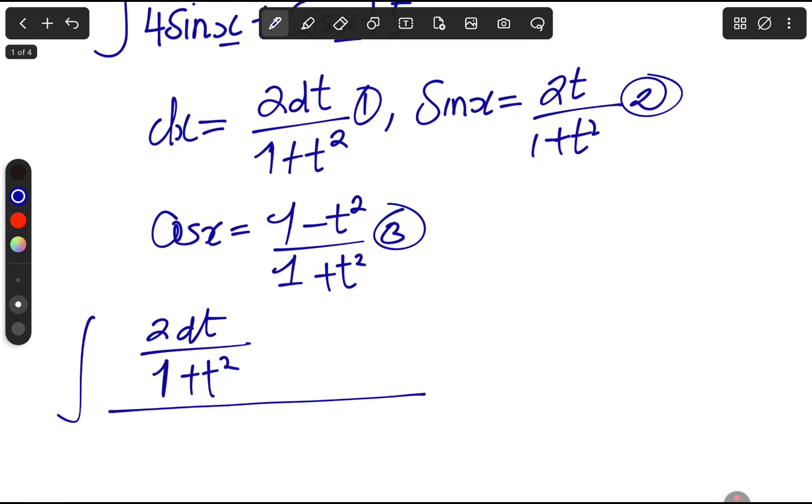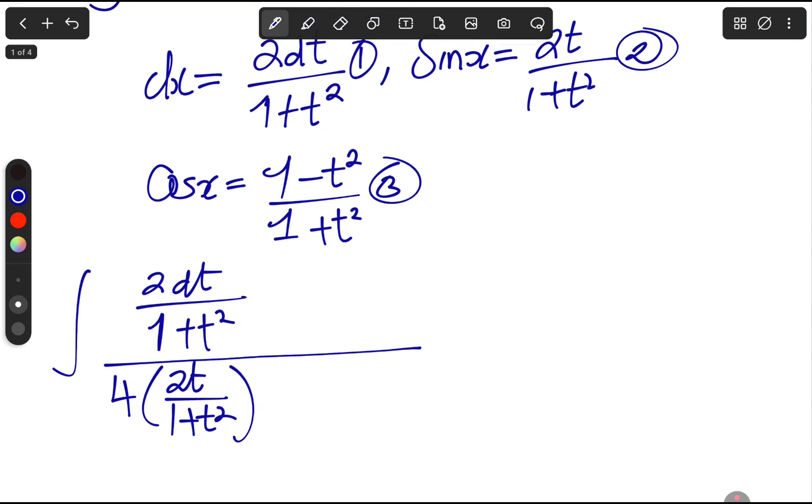Where we have sine x, we know what to put, but there's a 4 in front. So we put 2t over 1 plus t squared like that. We close the door, we have plus cosine - cosine, we are putting 1 minus t squared over 1 plus t squared, and we have a plus 5.